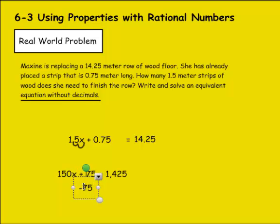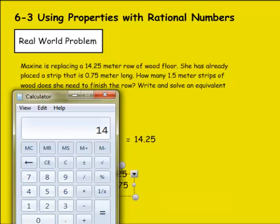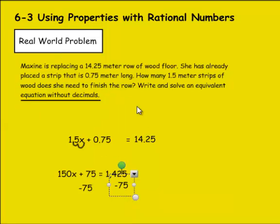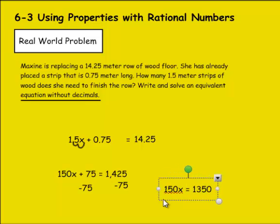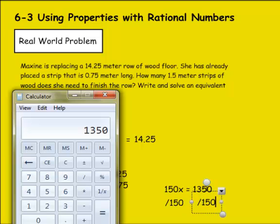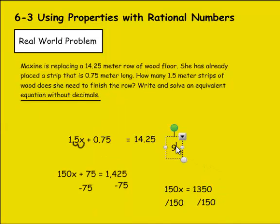I can subtract by 75 now. So 1425 minus 75 would be 1350. So 150x equals 1350. Divide both sides by 150. So 1350 divided by 150 equals 9. So it would take 9 of those 1.5 meter strips of wood.